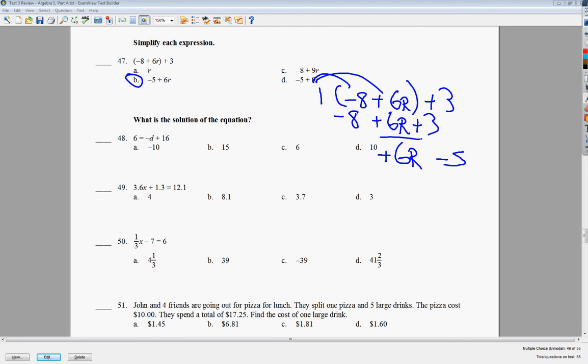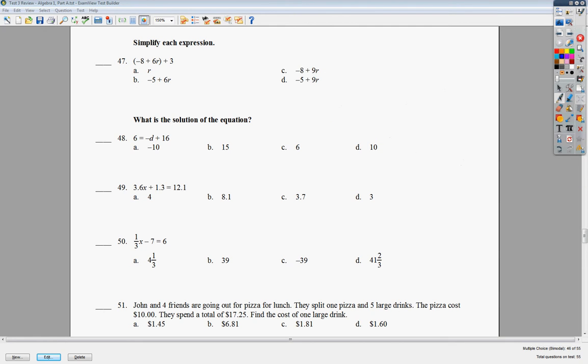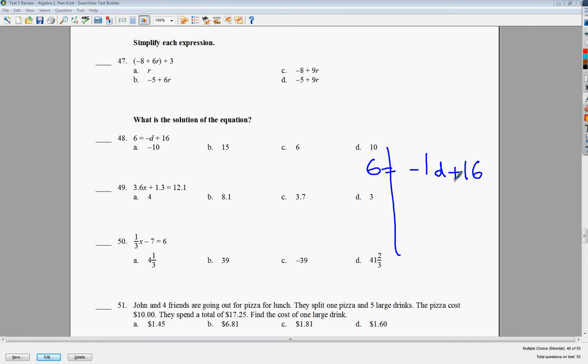Number 48. This is one that tripped a lot of people up. Or this type of problem tripped a lot of people up in the last test. Because people forgot the negative in front of that d. So when you write it down, it might be a good idea to go ahead and put that negative 1 there. To get rid of plus 16, I subtract 16. End up with negative 10. What a lot of people would pick last week was negative 10 is the answer. It's not. Divide by negative 1, because this shows times, d is equal to 10. So the answer to number 48 is d and not a. That's what made it difficult.